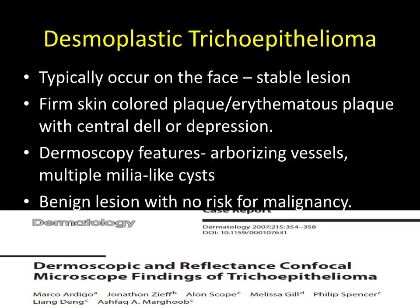Here are the cords of basaloid cells on close-up. This lesion proved to be a desmoplastic trichoepithelioma. This is a lesion that typically occurs on the face, usually of long duration and stable. It can be slightly erythematous and often has a raised border with a central indentation. Dermoscopy classically reveals a shiny white background with multiple milia cysts and vessels, some of which can be arborizing. These lesions are benign and do not have a risk for malignancy.